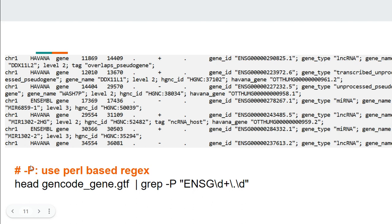Now let us use hyphen P. Capital P is for Perl-based regular expressions — using hyphen P we can give complex regular expressions. So hypothetically, what we have is a GTF file where each row contains gene information. The gene ID is present — this is the Ensembl gene ID — and we want to fetch this information. The pattern I will use is ENSG followed by digits: in Perl regex we denote digits as \d, then plus means one or more digits.